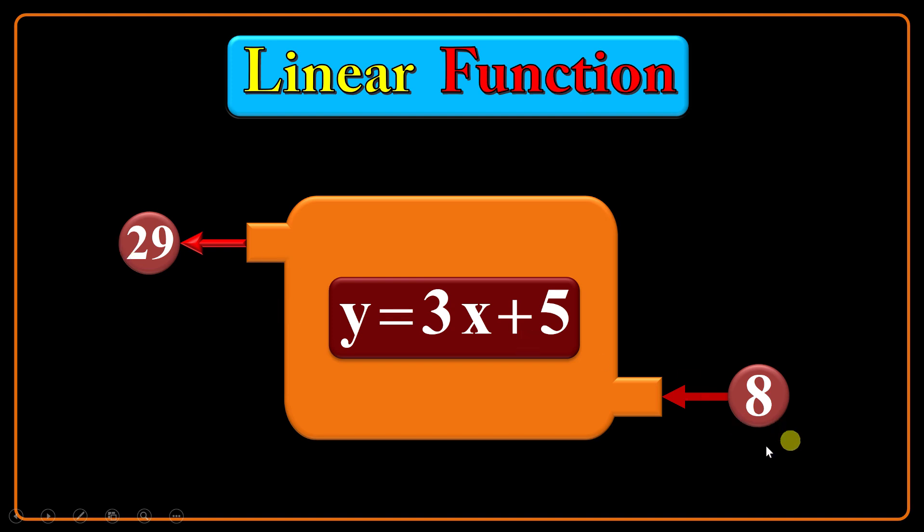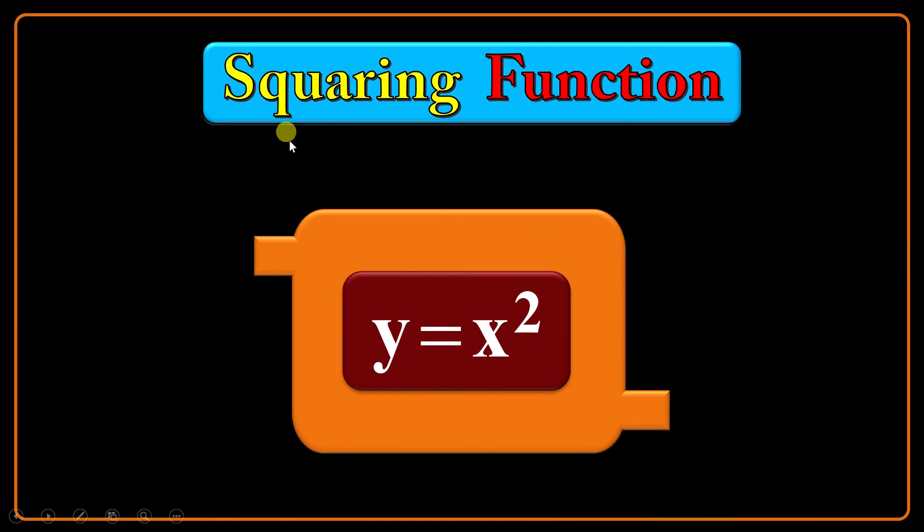Squaring function: another example. Here the rule is different. y is equal to x to the power of 2, so the input is raised to the power of 2. For example, I give 3 and I will get 9. If I give 8, 8 is raised to the power of 2, so it will produce 64, and so forth.